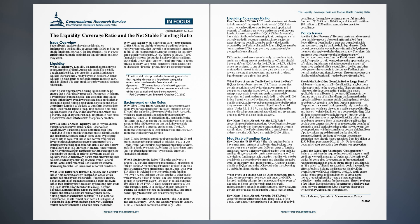Net Stable Funding Ratio. How does the NSFR work? The rule requires banks to have a minimum amount of stable funding backing their assets over a one-year horizon. Different types of funding and assets receive different weights based on their stability and liquidity, respectively, under a stressed scenario. Assets that do not qualify as HQLA under the LCR require the most backing by stable funding under the NSFR. What types of funding can be used to meet the rule? Long-term equity gets the most credit under the NSFR, insured retail deposits get the next most, and other types of deposits and long-term borrowing get less credit. Borrowing from other financial institutions, derivatives, and certain brokered deposits cannot be used to meet the rule.